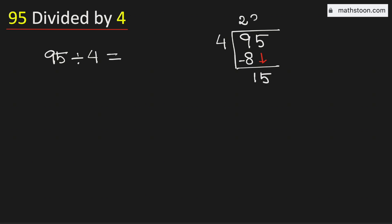Now 4 times 3 is 12. Subtract and we get 3. Now 3 is less than 4. But we don't have any number to bring down here.